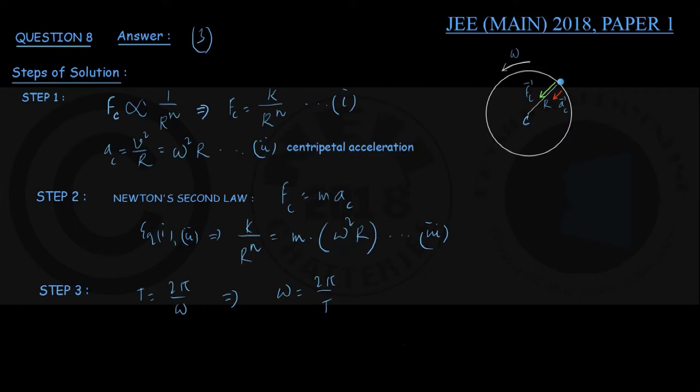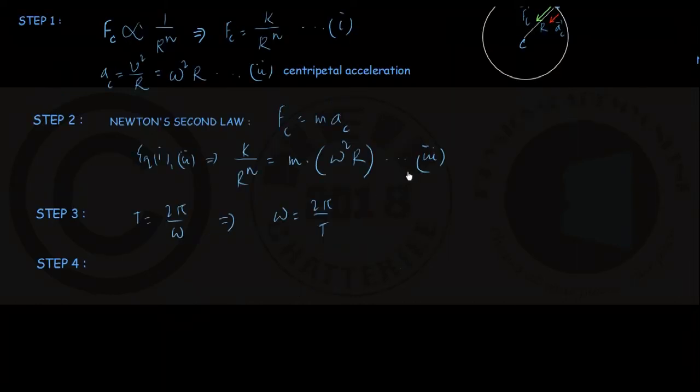Therefore, in my next step using equation number 3, you can write k upon r to the power n is equal to m into omega squared into r. Now substitute omega by 2π upon t, t being time period, that whole squared into r.